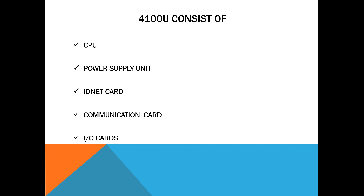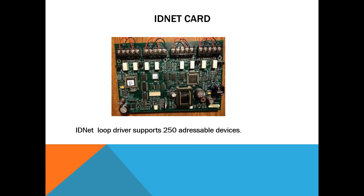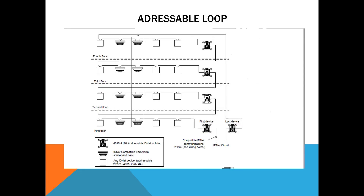This is the ID Net Card. This is the Loop — in the loop this is the ID Net Card, and this is the communication card. This is the Relay Card — the Relay Interface for control purposes. This is the Input Output Card, connected to fire detectors, output devices, strobe, and horns. This is the ID Net Loop Driver, supporting 250 addressable devices. This is the MCP — the Main Call Point. This is the Smoke Detector, model 290U, an addressable device. This is the building layout showing the addressable loop panel with smoke, gas, and fire detectors.